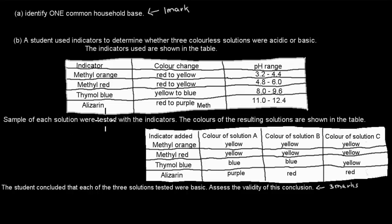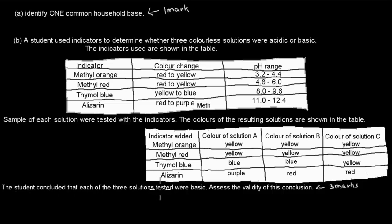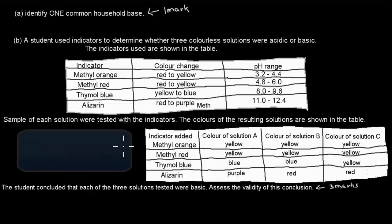Samples of each solution were tested with the indicators. The colors of the resulting solutions are shown in the table — color solution A, color solution B, and color solution C. The student concluded that each of the three solutions tested were basic. Assess the validity of this conclusion — that's worth three marks. Pause the video, attempt the question, and when you're ready, press play.